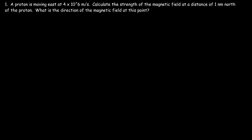In this tutorial, we're going to focus on calculating the strength of the magnetic field and its direction of a moving charged particle. In this example, we have a proton moving east at 4 times 10 to the 6 meters per second. Let's start with a picture. The direction of the velocity is to the right, and we want to calculate the strength of the magnetic field at a distance of 1 nanometer north of the proton, at point A.